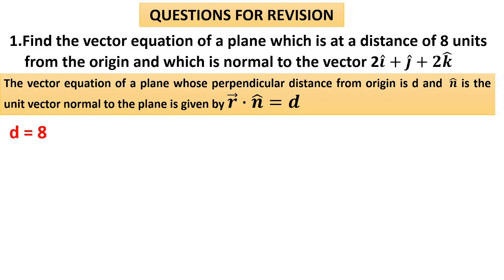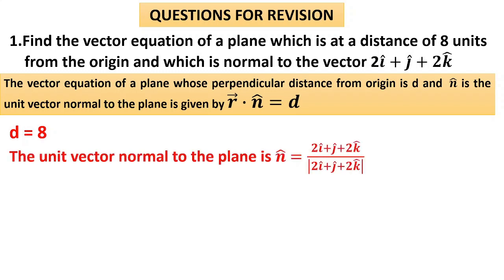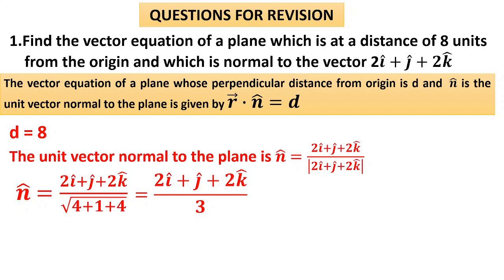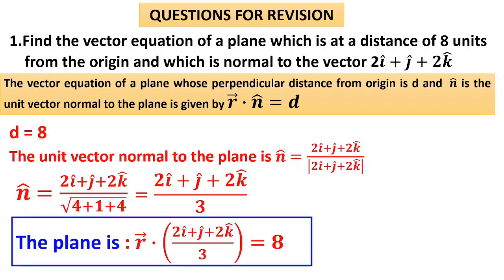The vector n in r dot n-hat must be a unit vector. The given normal vector 2i plus j plus 2k is not a unit vector, so we divide by its magnitude: square root of 2² plus 1² plus 2² equals root 9 equals 3. The unit normal is therefore (2i plus j plus 2k) / 3. The answer is r dot [(2i plus j plus 2k) / 3] equals 8.